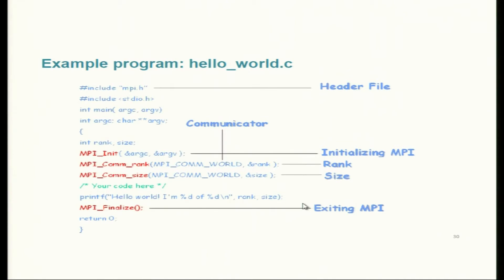Here is a small hello world MPI program. We include the MPI header file and pass command line arguments to main. We call MPI_Init with those arguments, then MPI_Comm_rank passing the rank variable address, then MPI_Comm_size, do some work such as printf, and finally MPI_Finalize. Init and finalize are must-have calls — without MPI_Init your program will have a compilation error.